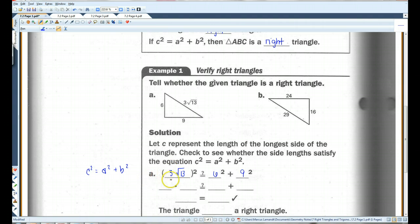Okay, 3 squared is 9. Root 13 squared just removes the square root. Okay, 6 squared is 36. 9 squared is 81. 9 times 13, let's see here. 117. And if you add these two together, you get 117. It checks out, so the triangle is a right triangle.